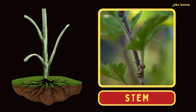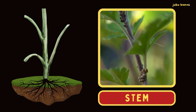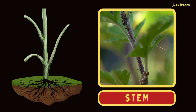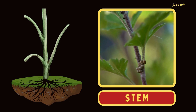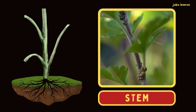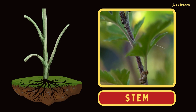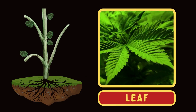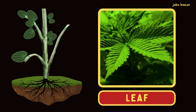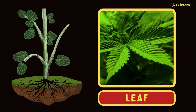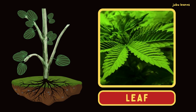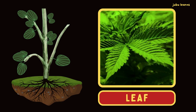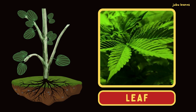Stem usually grows above the ground and carries minerals from water to leaves. Leaves prepare food for the plant.